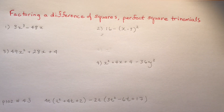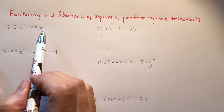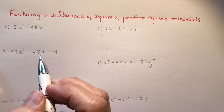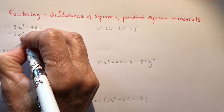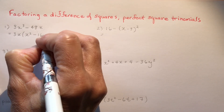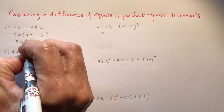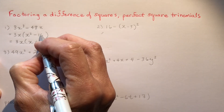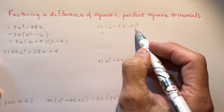Sometimes the difference of squares is in disguise — there's a common factor to remove first. For 3x³ − 48x, always look for a common factor first: it's 3x. Dividing out gives 3x(x² − 16). Now x² and 16 are perfect squares, so we take square roots: x and 4, giving the final answer 3x(x + 4)(x − 4).